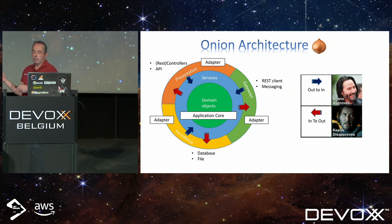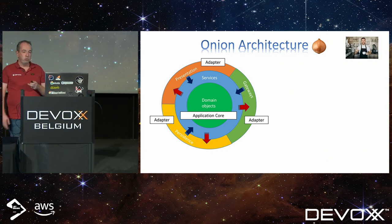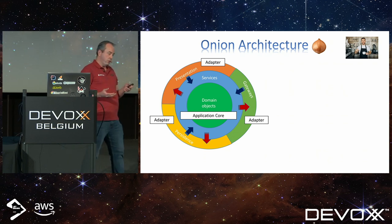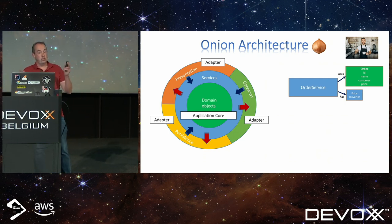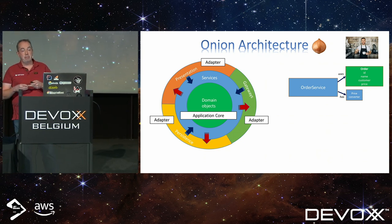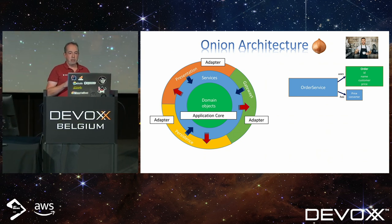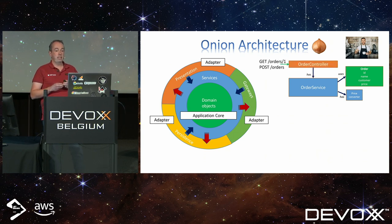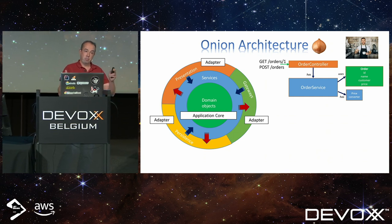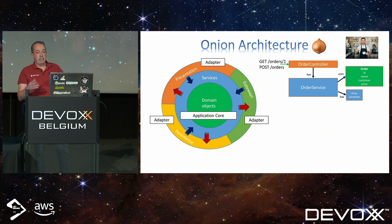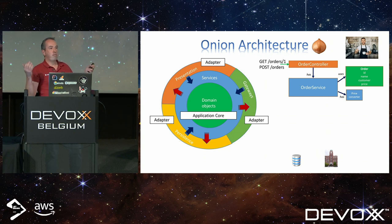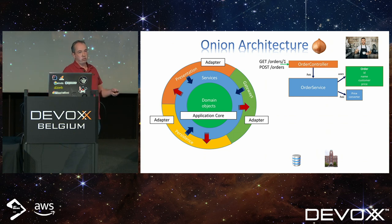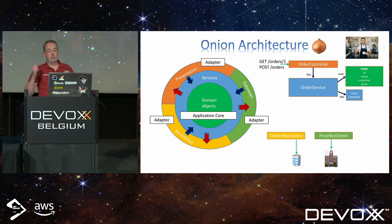If you translate this to an application — for example, a barista order service you can use to take in an order and maybe get an order back — you would have an order service in the application core, maybe some domain objects and extra business logic like a price converter. To make use of this, you write a controller — a REST controller — as part of your presentation layer. The application core might also need something external, like a database to store orders in, or a call to headquarters to get the latest price of an espresso.